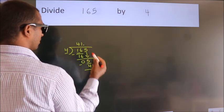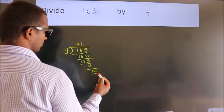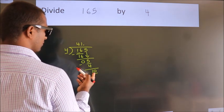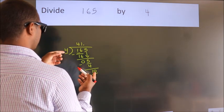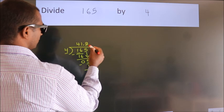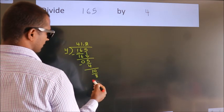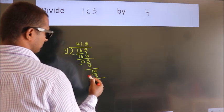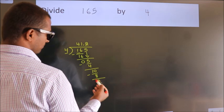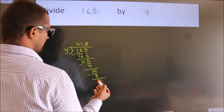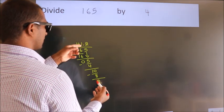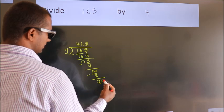what we do is we put a dot, take 0. So 10. A number close to 10 in the 4 table is 4 times 2 is 8. Now we subtract, we get 2. After this, we already have the decimal, so directly take 0.